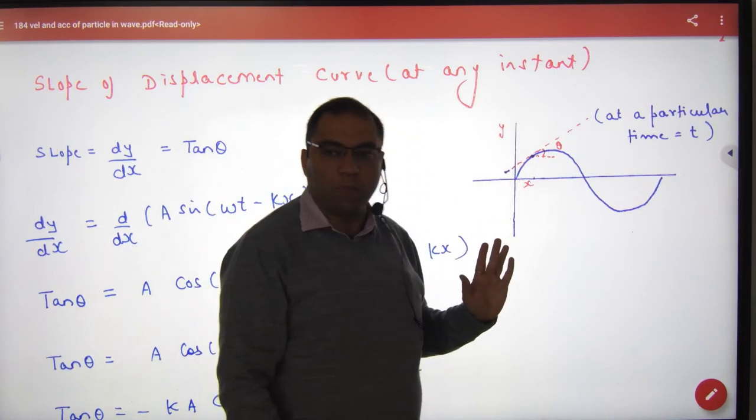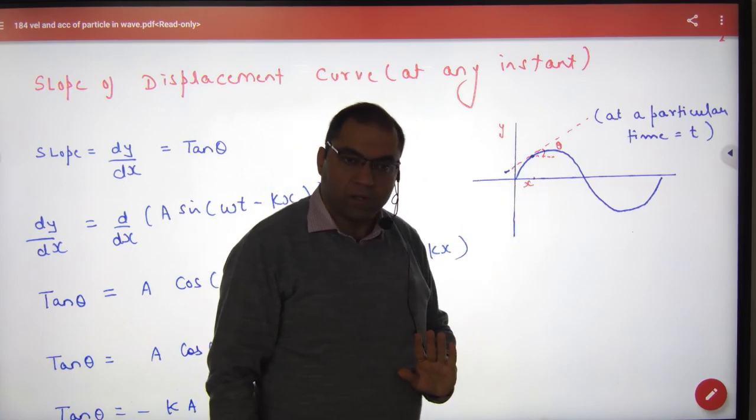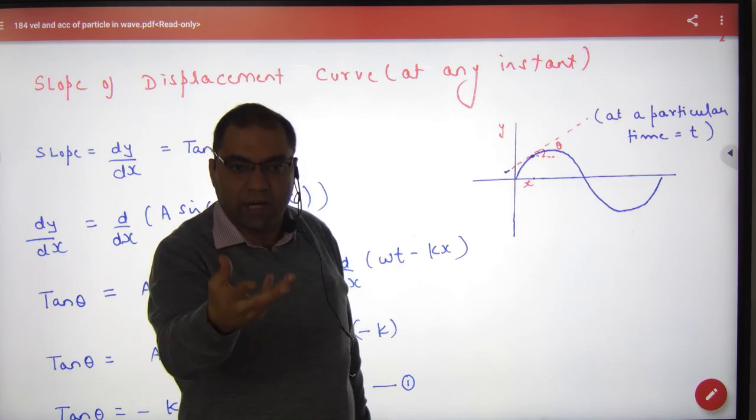It will give a slope. There are two ways to find the slope: tan theta or dy by dx. What is the significance of the slope? What will it be?